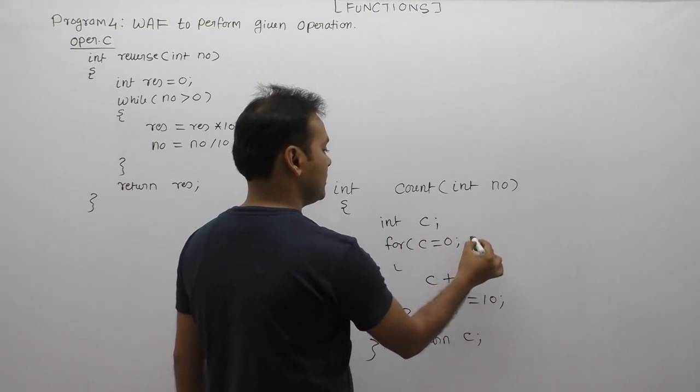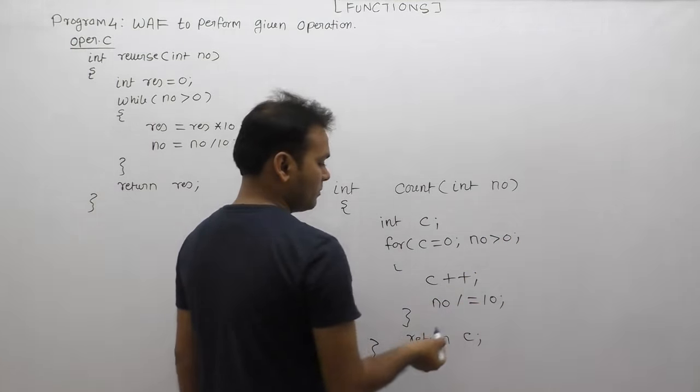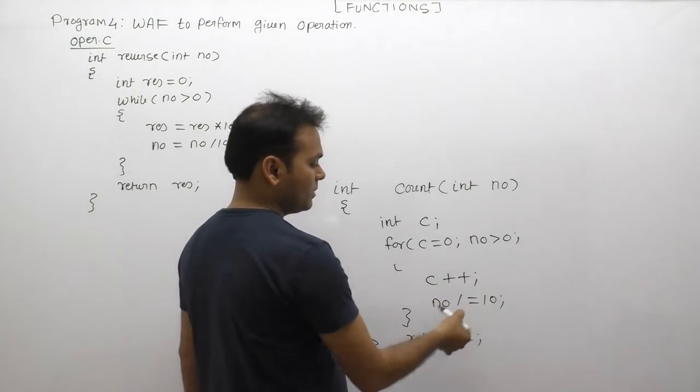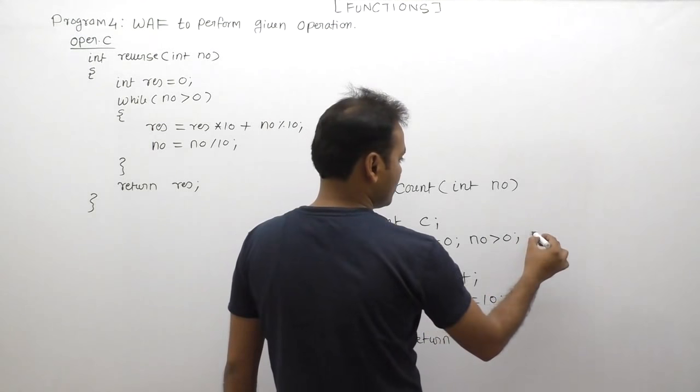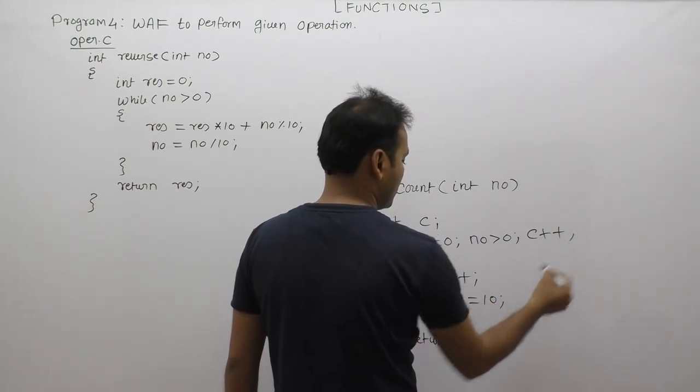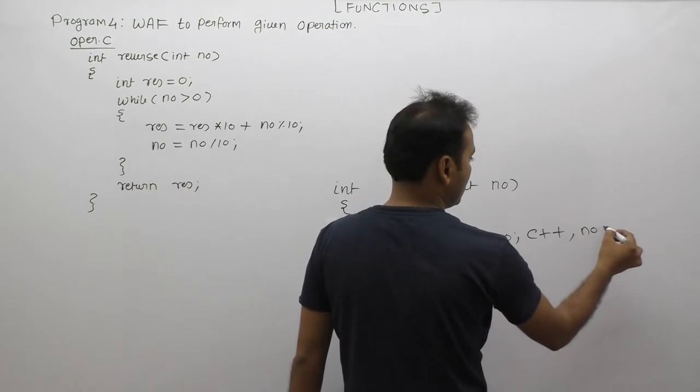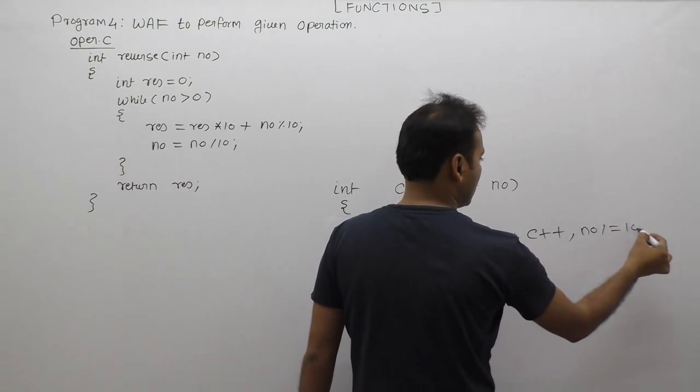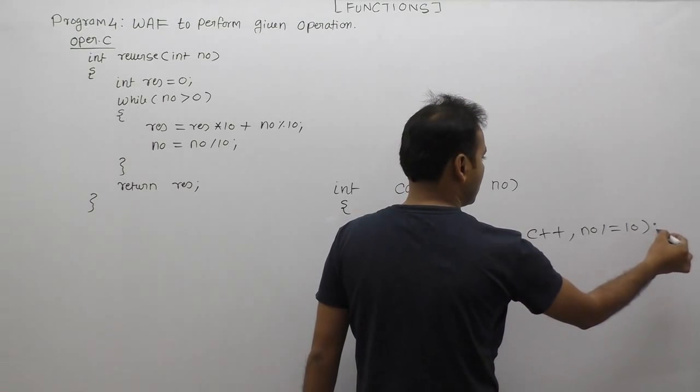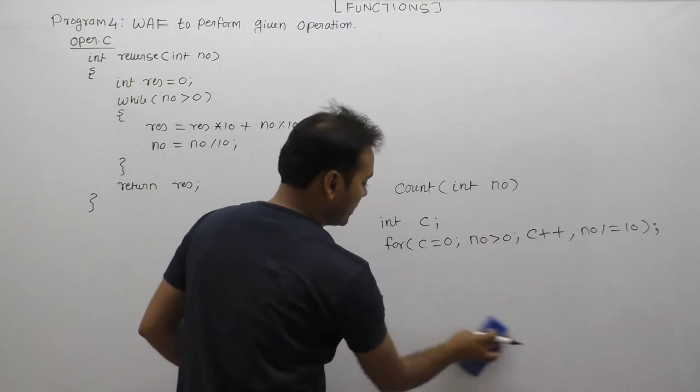The same as previous, number greater than zero. Plus every time perform, in this case, c++ and comma number equals to number divided by 10. Number divided equals to 10, terminated by semicolon. Next one, there is no need of providing body here.